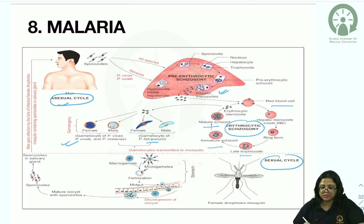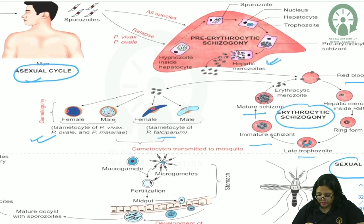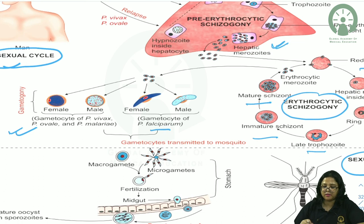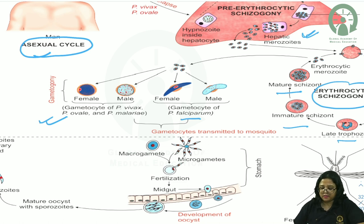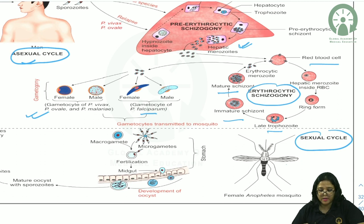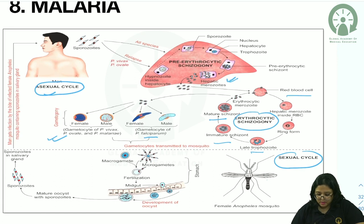The mature oocyst contains sporozoites, which reach the salivary gland of the mosquito and are released when the mosquito bites another human. Summary: definitive host (sexual cycle) is the female Anopheles mosquito; sporozoites are infective to man; asexual cycle in man involves pre-erythrocytic schizogony in the liver and erythrocytic schizogony in RBCs; merozoites become gametocytes; gametocytes are infective to the mosquito.